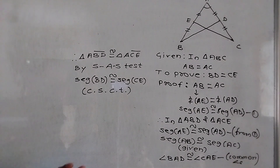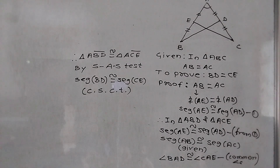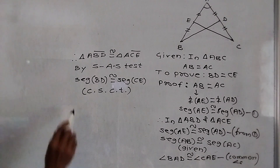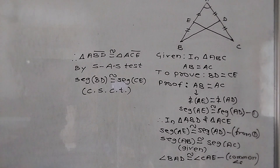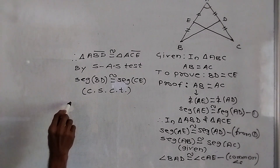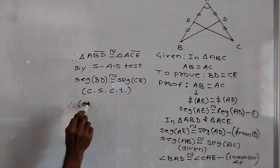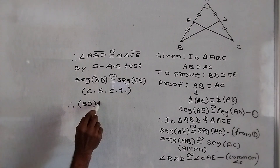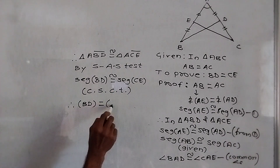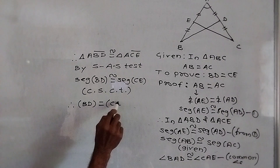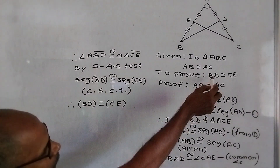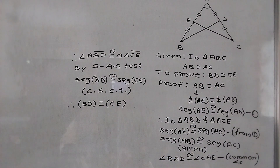If any two triangles are congruent, then the remaining three parts are congruent. Therefore, we write BD is equal to CE. This is our proof. Did you understand?